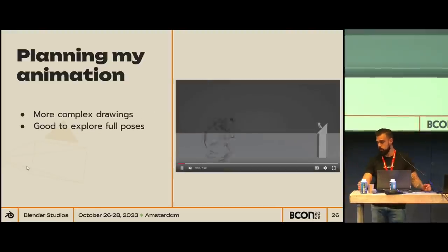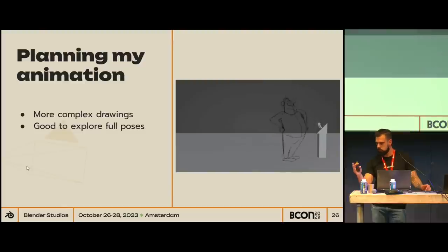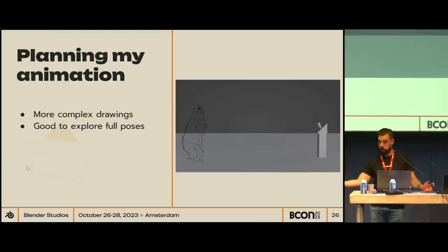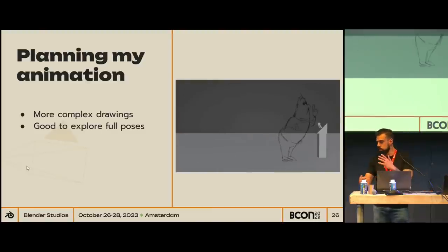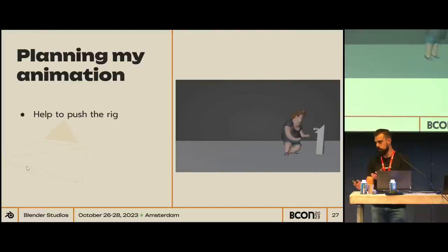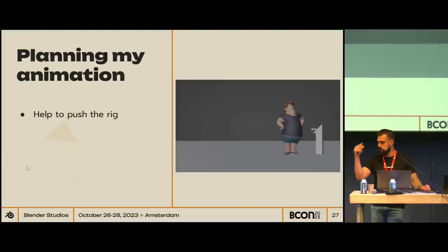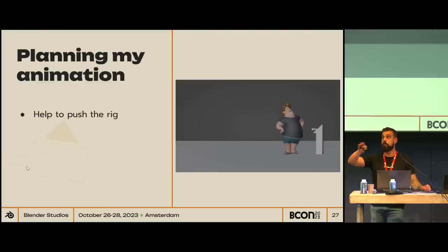You can use the same method but with more complex drawings. These were for pre-production for Pets — we didn't have the characters yet, so I did some poses. Having a more complex drawing helps you pose a character more because you have more to play with, and it's really good for exploring different poses and making things more cartoony. That then helps you push the rig, trying to find the poses you drew before. It's simpler to do a line of action with a stroke than trying to pose a full rig in 3D.